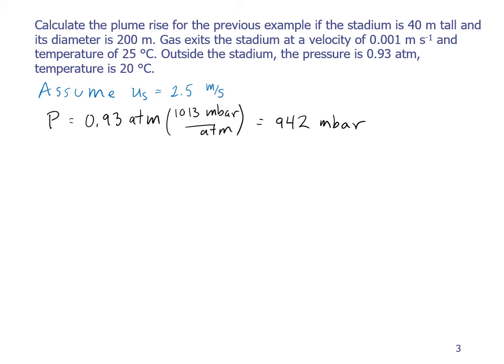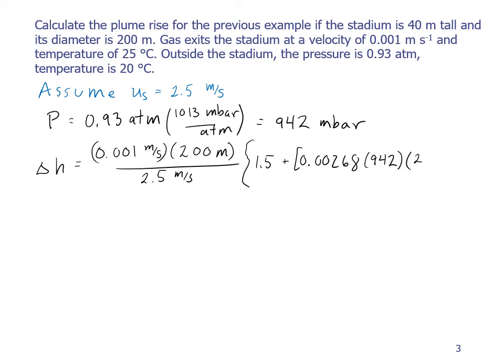We can now make the substitutions into Holland's equation, and our delta H equals 0.001 meters per second, that's the velocity of the stack gas exiting, times 200 meters, which is the diameter of the stack, divided by the wind velocity, which we're assuming is 2.5 meters per second at the top of the stadium, times the empirical part, which is 1.5 plus 0.00268, times the pressure in millibars, which is 942, times the diameter in meters, which is 200, times these temperatures, which is the stack temperature of 298, 25 degrees Celsius, minus ambient, which is 293, the 20 degrees Celsius, divided by the stack temperature of 298 Kelvin. And this gives me 0.8 meters.